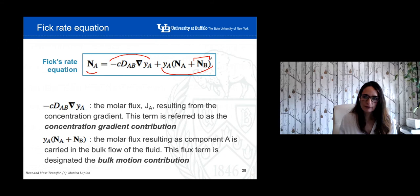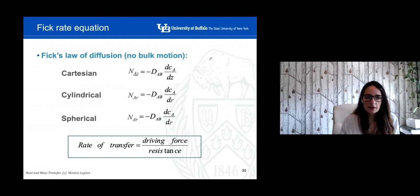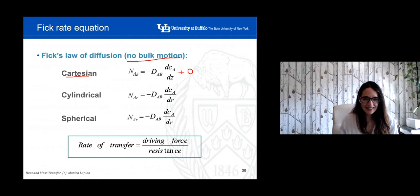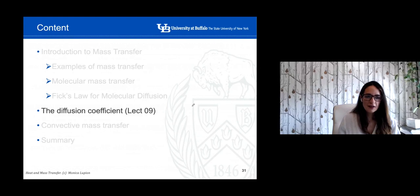We can express Fick's law of diffusion in different coordinate systems. For simplification, let's imagine there is no bulk motion — the second term is zero. In coordinates other than Cartesian, here is the case of cylindrical coordinates and spherical coordinates. We're going to use these expressions in the problems.